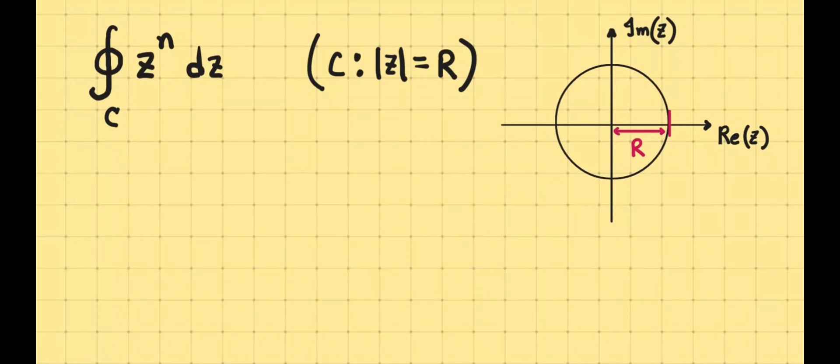So we have the contour, which is a circle of radius R. Now, usually what we do is that a contour needs to be parameterized. And the easiest way to parameterize a circle is by considering the angle it makes with the reference line, specifically with the x-axis, in this case the real z-axis, and this serves as a good choice of parameter.